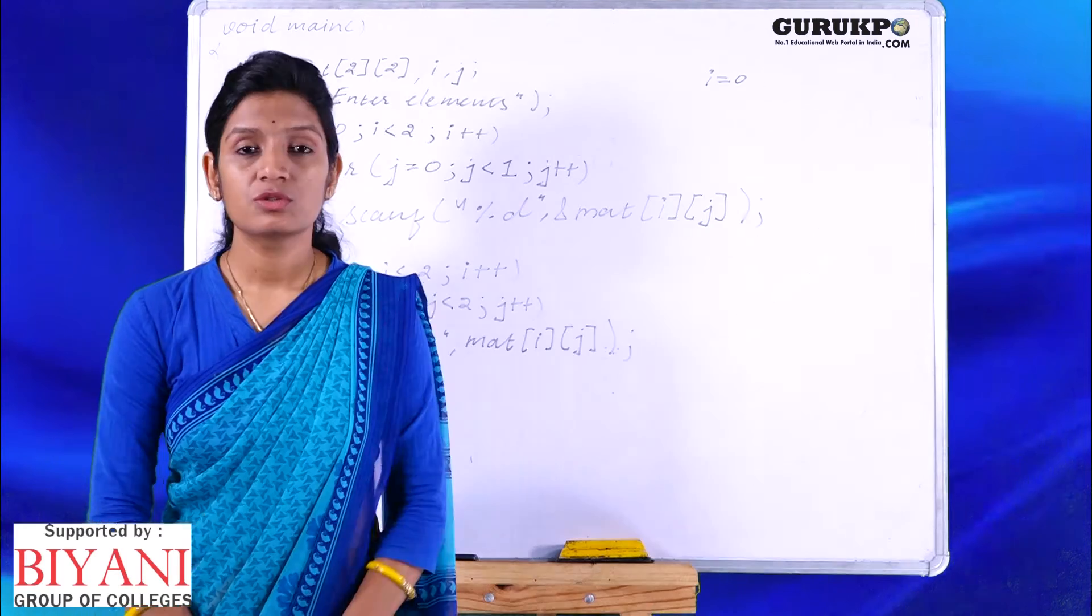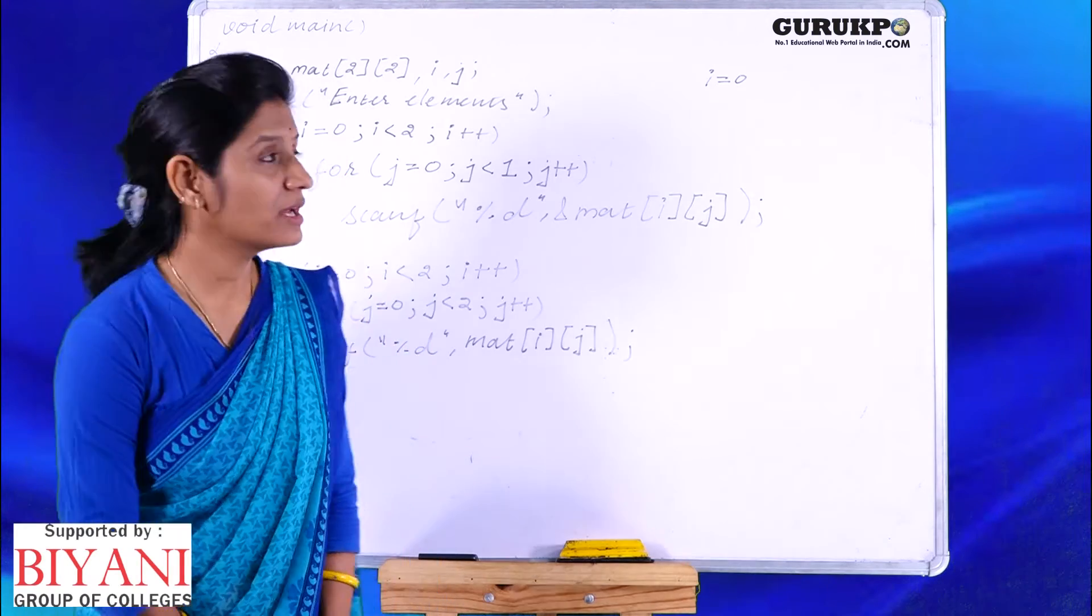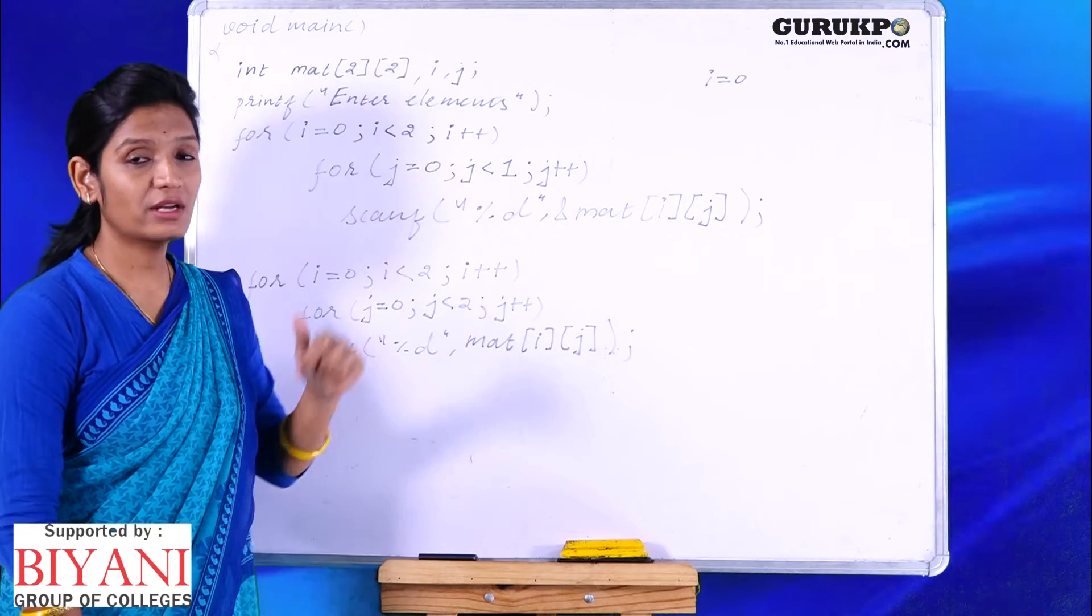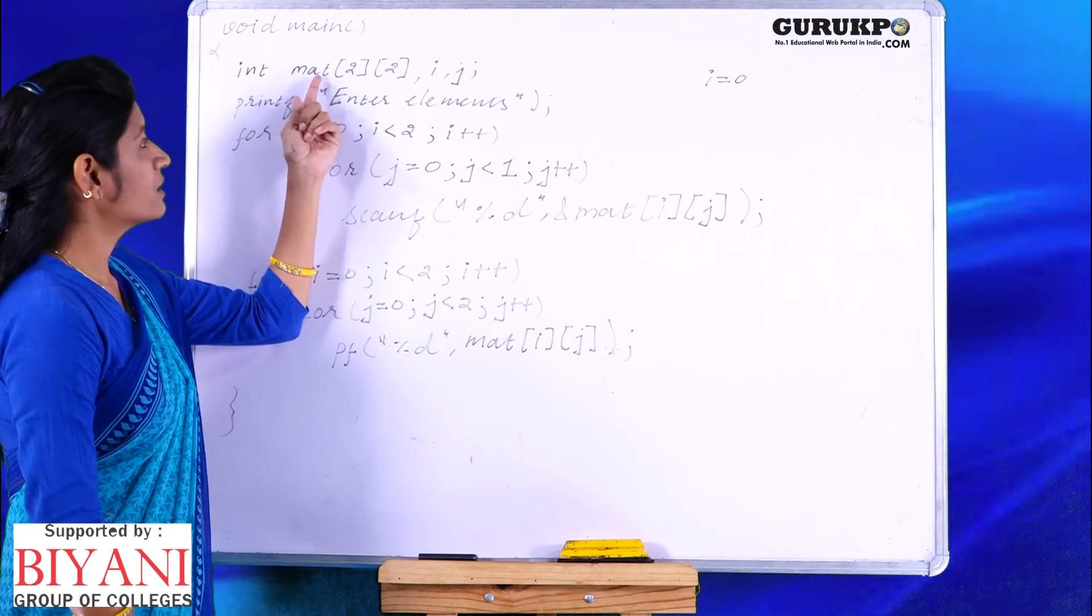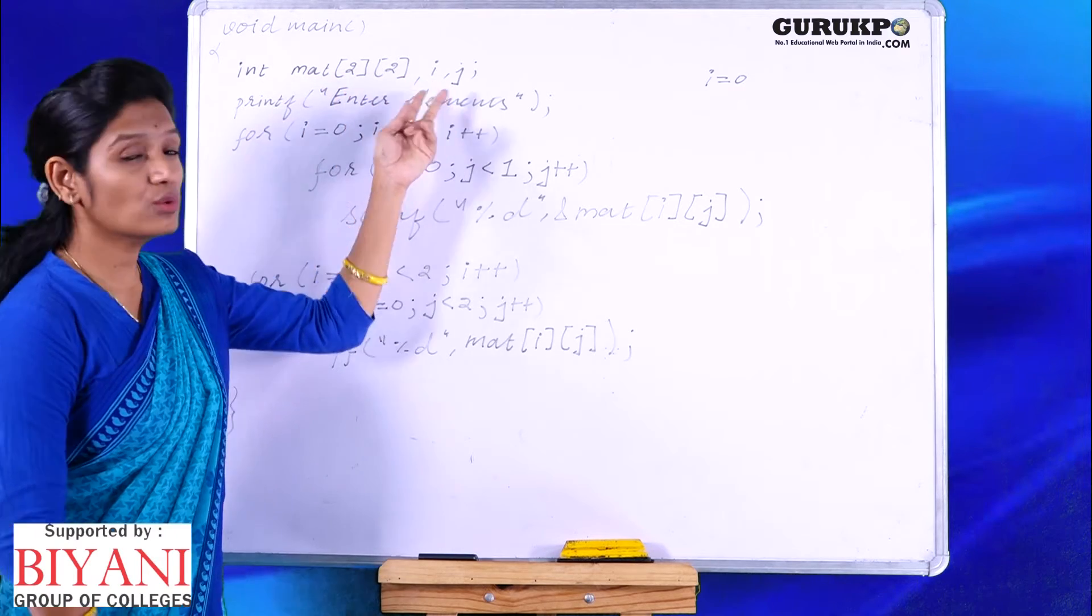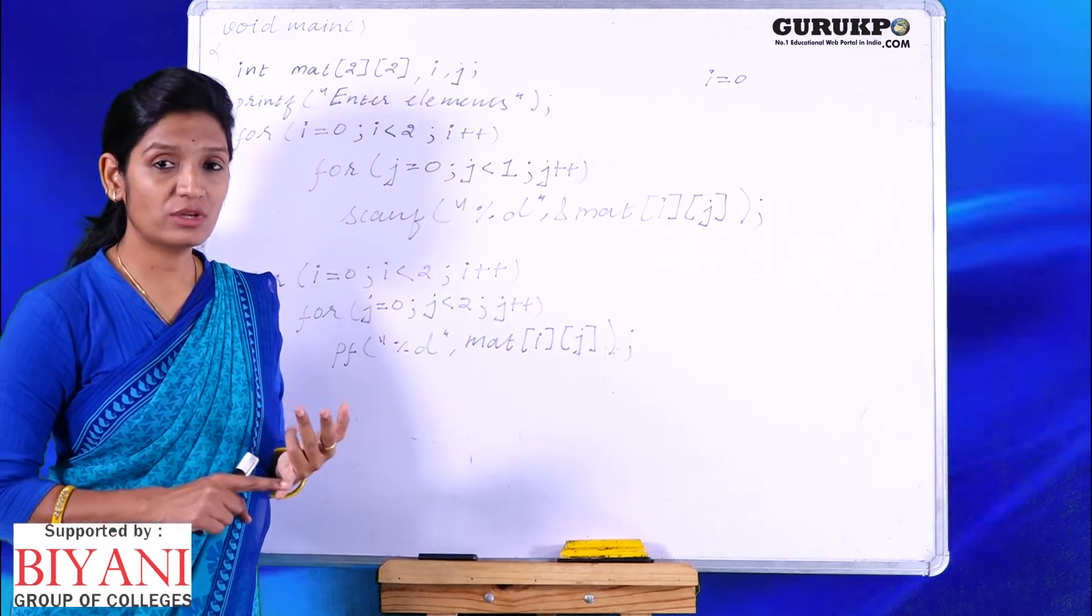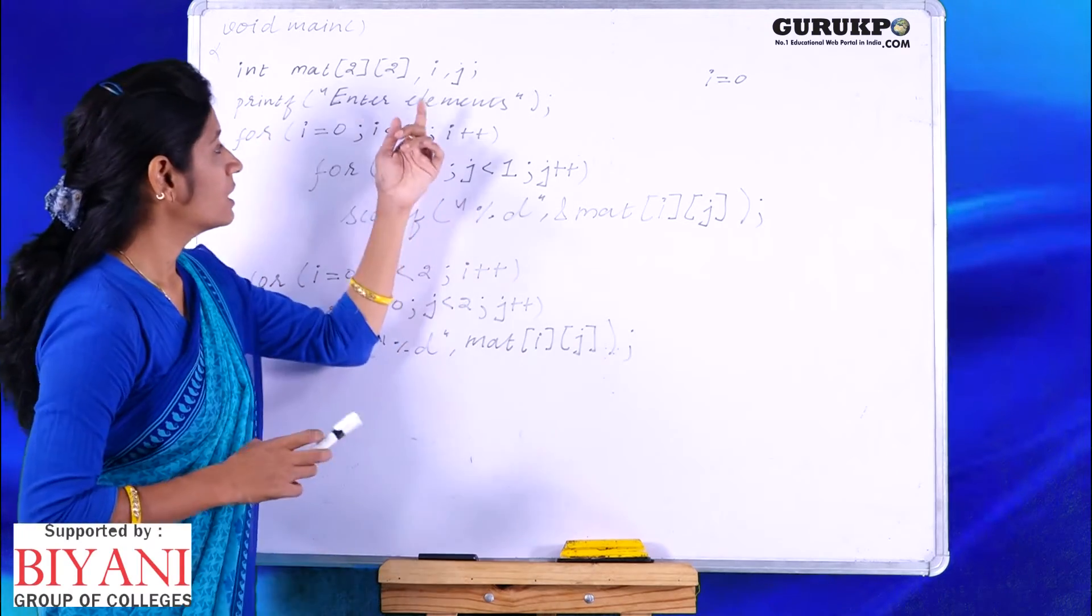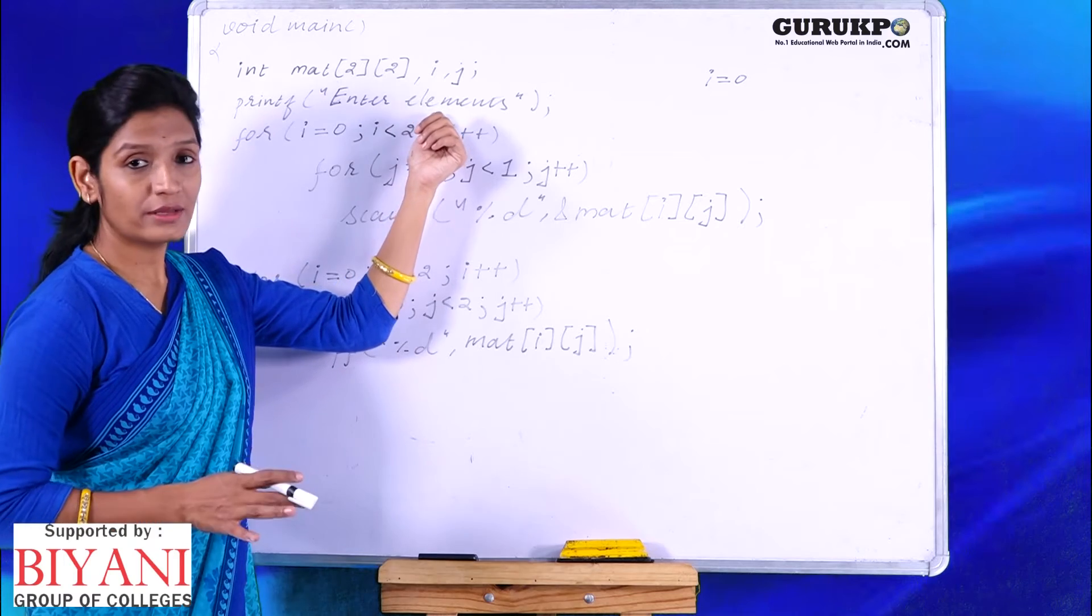Now let us see a program. Let us see the example for two dimensional array. We have continued the same example that we discussed while declaring the array. We have taken an integer matrix 2 by 2 again, and we have taken two counters as well. These counters will count the number of rows and number of columns. We have asked the user to enter the elements.